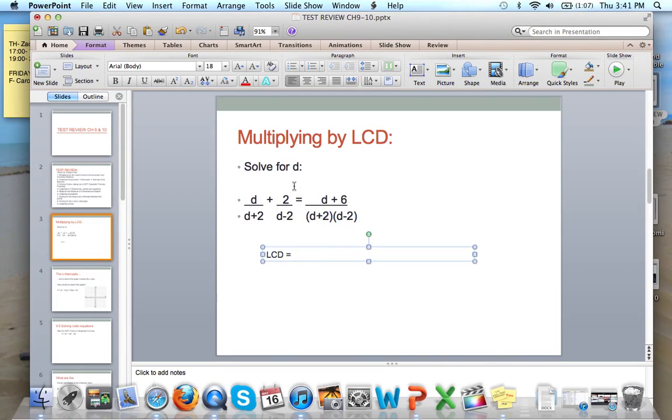Here if you look, we have d over d plus 2 plus 2 over d minus 2, d plus 6 over d plus 2, d minus 2. Our least common denominator is going to be a product of all of the denominators here. So if you got this, d plus 2, d minus 2, you are indeed correct.